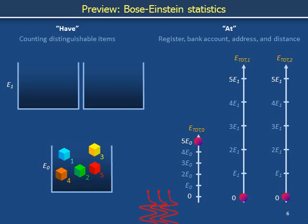If we try to tickle the system with outside energy, how easily does the system become excited? As a more specific example, how many ways can I push three particles from the ground state into the excited states? In the 'at' picture, we are asking how many ways we can arrange the populations, balances, or occupancies of the states so that they still add up to 5 and so that the occupancy of the ground state is now 2. There are four ways: the one already pictured, and three others.